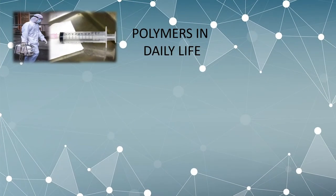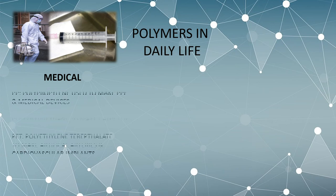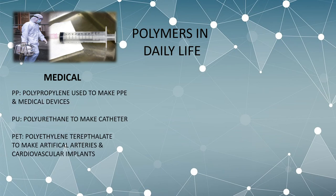Polymers are materials commonly used in our daily lives and have become fundamental in the medical field. For instance, polypropylene materials are used in various medical devices and as personal protective equipment (PPE). Polyurethane is used to make tubes known as catheters that are inserted into a patient's bladder. PET, or polyethylene terephthalate, is used in making artificial arteries and cardiovascular implants.